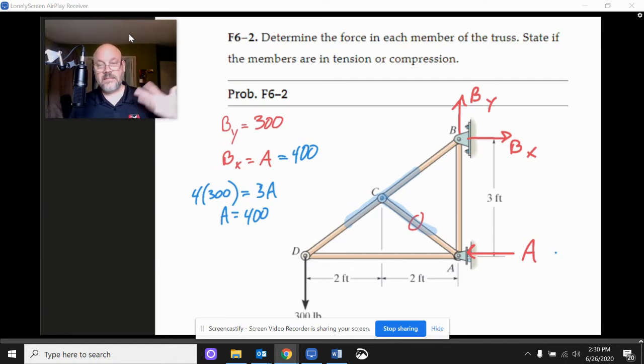And so you can kind of imagine this thing might try to fold up just a little bit somehow if C was able to sag. So we need the piece CA just for the sole purpose of keeping the point C where it belongs. So in real life, that's the point of having that one there. In terms of this particular 300 pound load, it doesn't make any difference. And actually, no matter what load we put on this thing, that it's going to be zero.